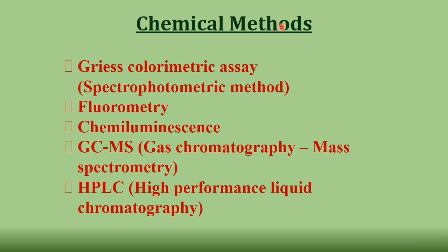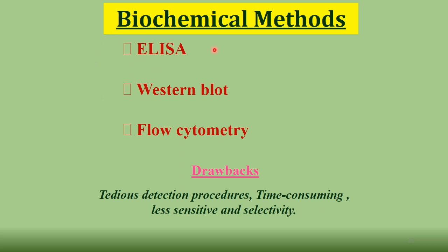Now that we know the biomarkers for hypoxia, what methods are available to detect and measure them? Conventional chemical methods include Griess colorimetric assay, fluorometry, chemiluminescence, gas chromatography, mass spectrometry, and HPLC. Biochemical methods include ELISA kits, Western blot, and flow cytometry. The drawbacks of these methods are that they are very tedious, not portable, and time-consuming.